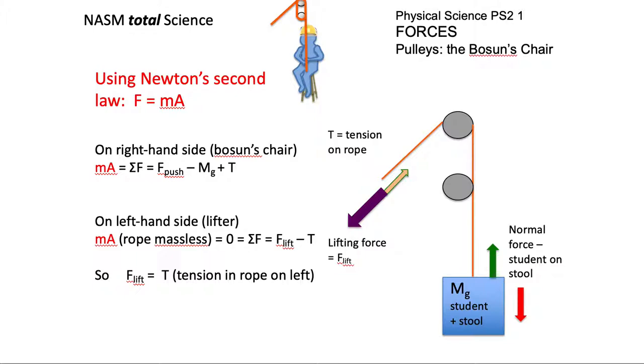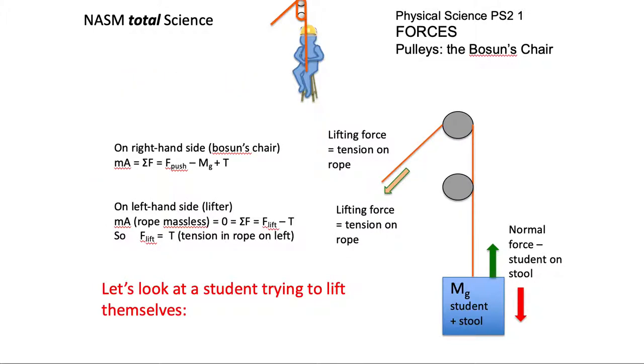We've got the force, the mass with gravity acting on it, and then the tension on the rope that's on the right-hand side. On the left-hand side, you've got the rope being massless, so zero mass, and you've got the lift force and the tension on the rope to the left.